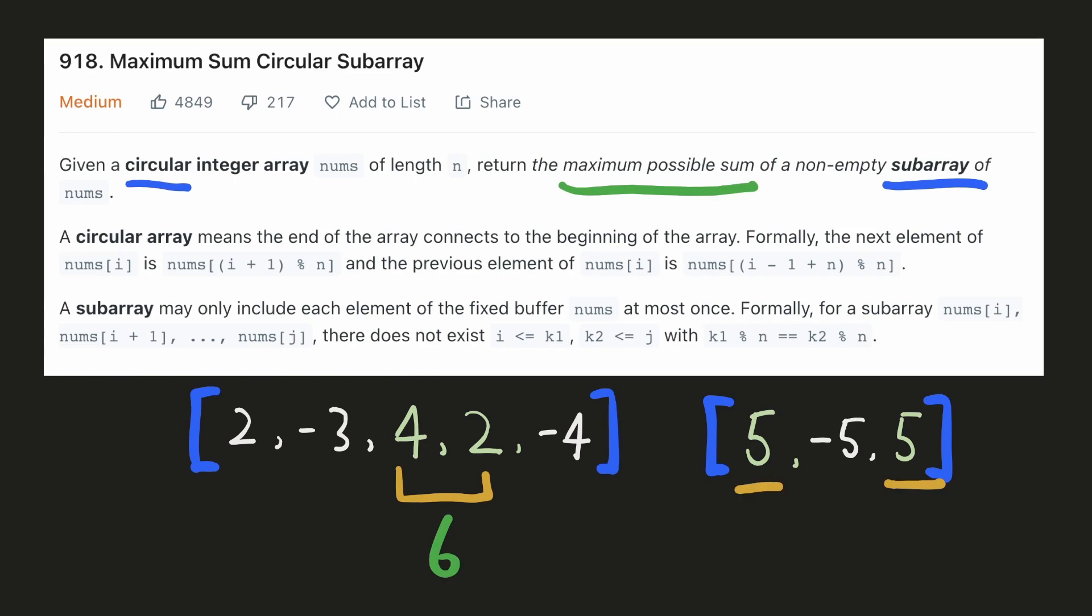In our second example, when we take the first and the last numbers, they would make a circular subarray and its sum would be 10, which is the maximum.